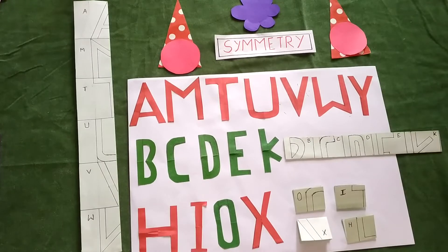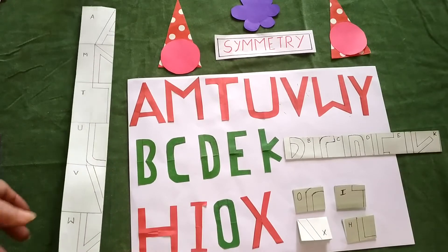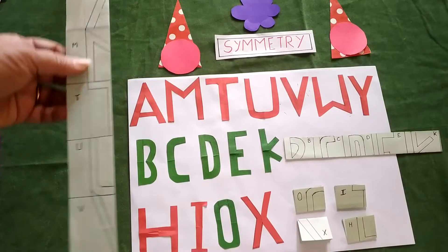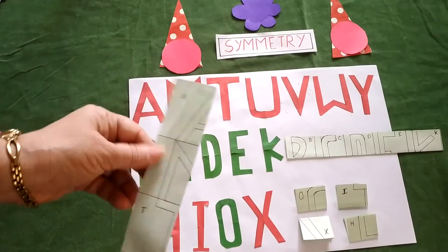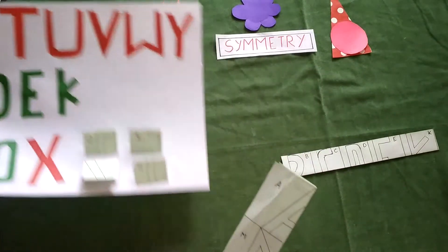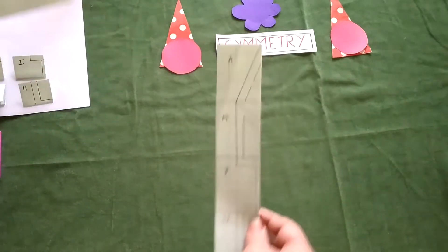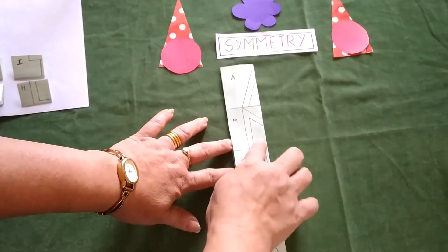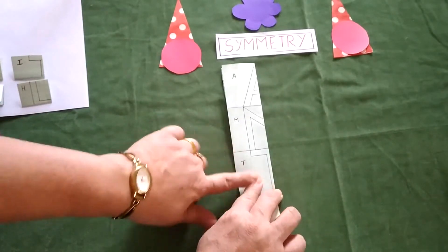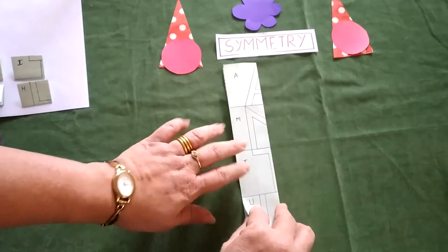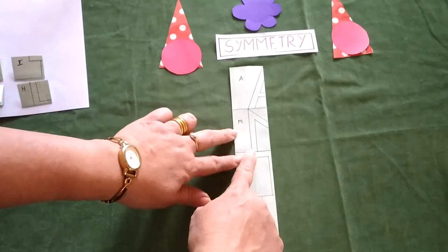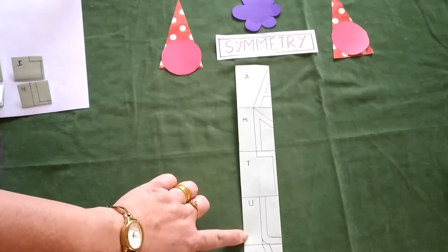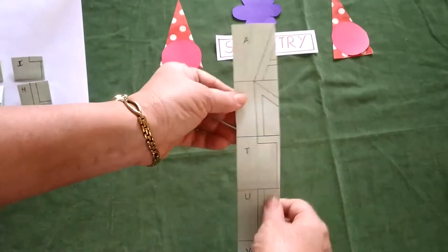So let me start with the first one. This is vertical line of symmetry. So you need to take a strip, fold it vertical along the length, and here 5 centimeter I have drawn horizontal lines.